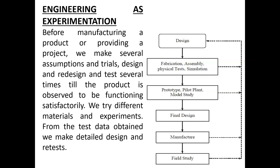Engineering is also considered to be an experimentation. It will have different phases, as we have studied in the waterfall model in software engineering. First we go with the design phase, then next we go with the physical test or simulation, then we go with the prototype — prototype means it will create a model. Once the model is completed, the final design will be there. Here you can see there is already feedback, so if there is any problem in fabrication or testing and simulation, it will automatically feed back to the previous step, and then a new design will be created.